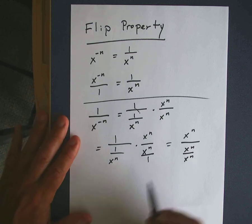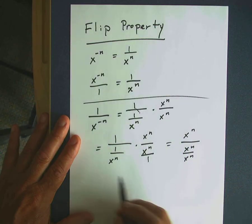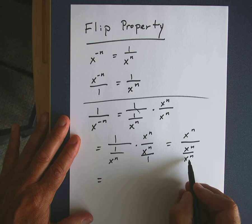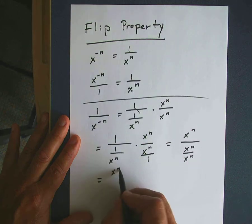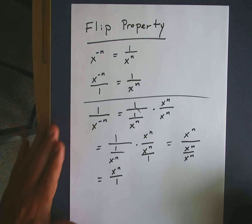So what I have is this in the numerator, this in the denominator. x to the n over x to the n is just equal to 1, so I get x to the n over 1.